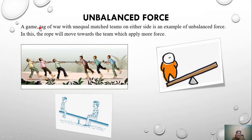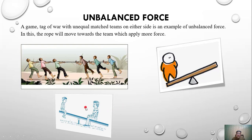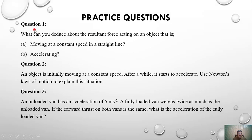One more example related to tug of war: unequally matched teams on either side. The rope will move towards the team applying more force — that is unbalanced force. Similarly, on a seesaw with no one on one end, the mass on the other end is more, so the force there is greater — this is also an unbalanced force scenario.